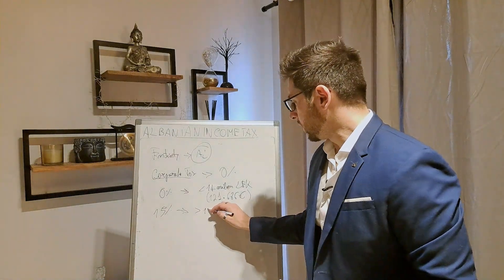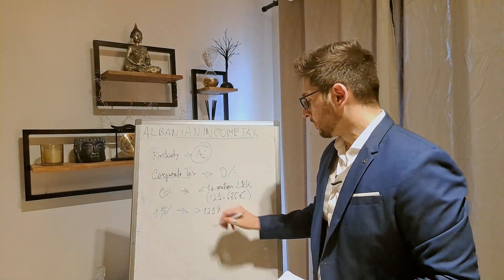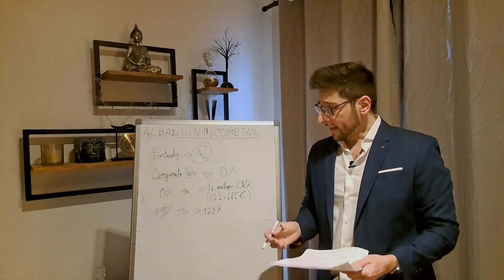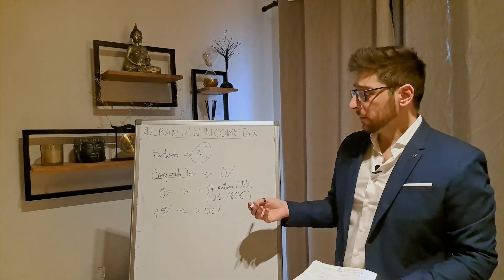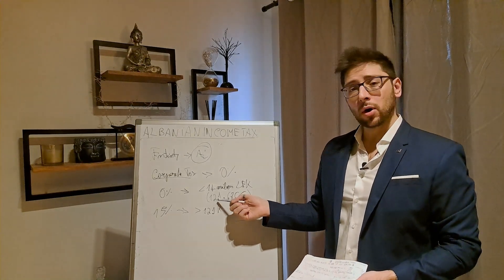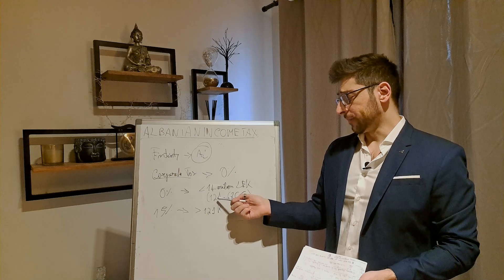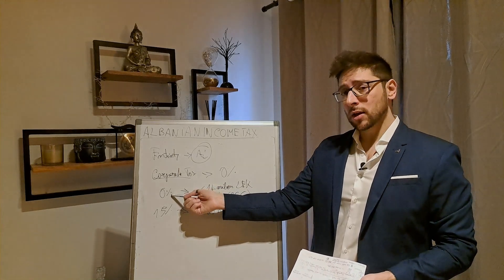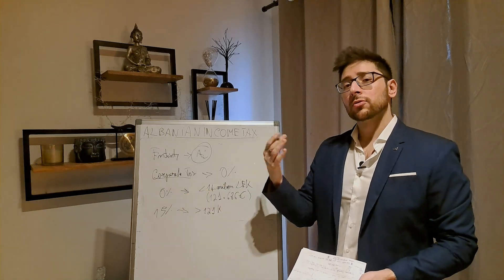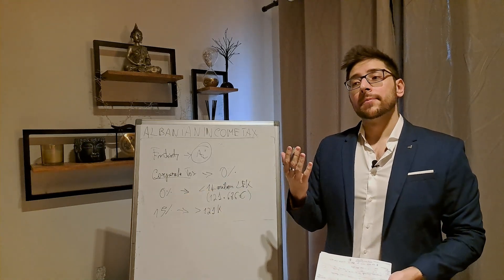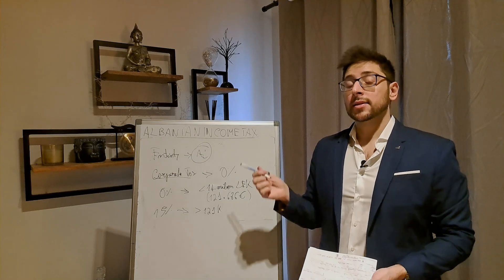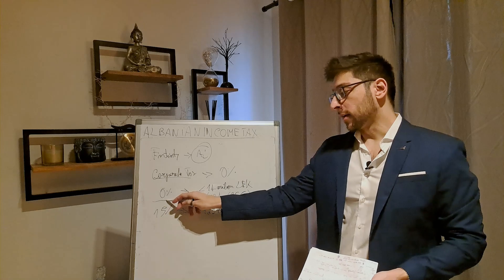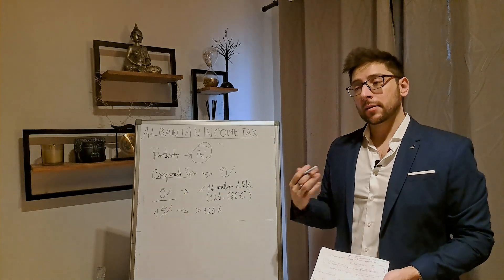So above this 121,000 K will be taxed at 15%. And then you can see here, things are getting extremely interesting because if your income is below 121,000 euro, you can have at corporate level 0% taxation, and then your dividend will be withdrawn at only 8%, as we have seen before. Okay,